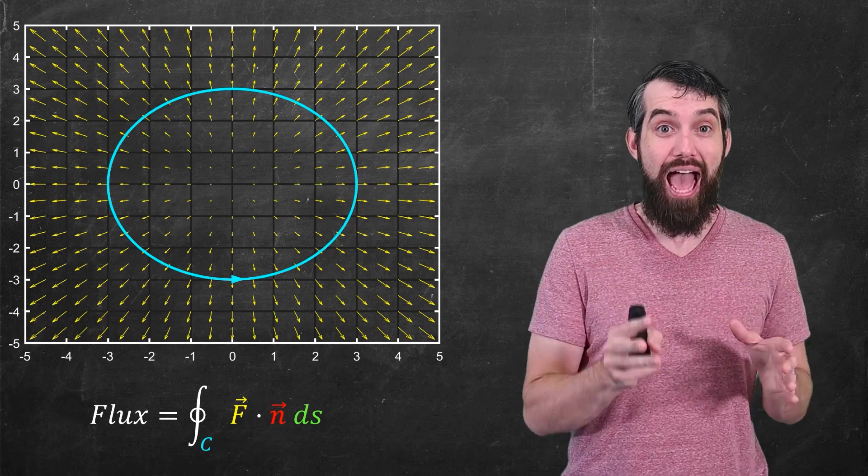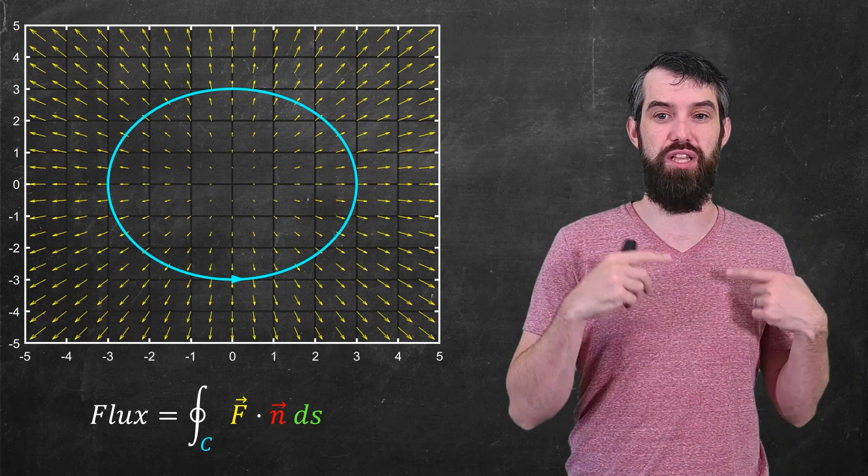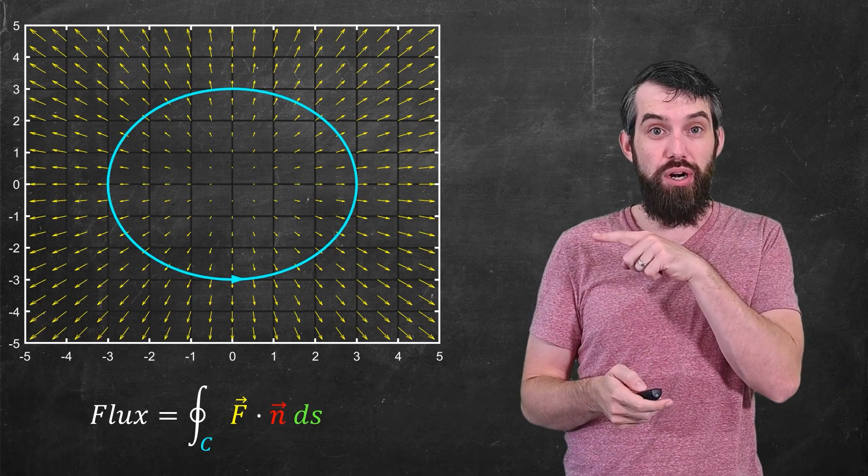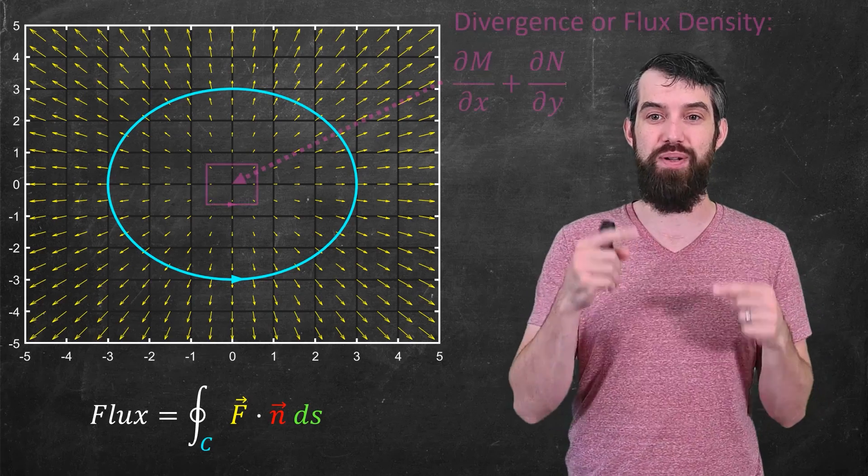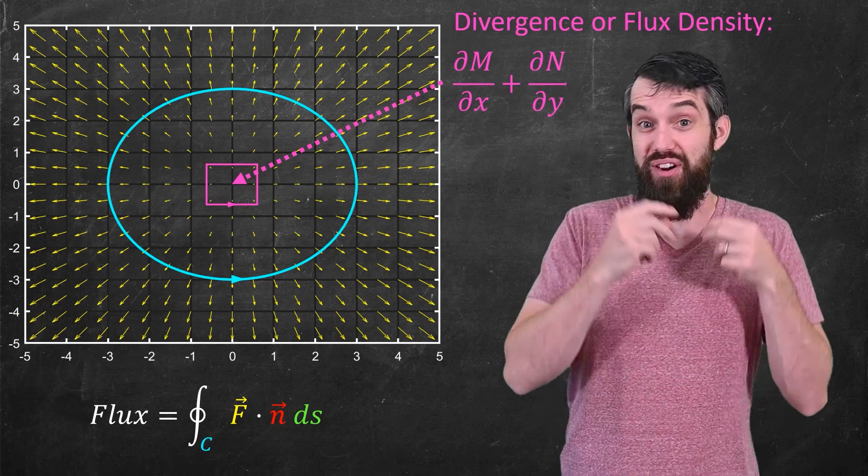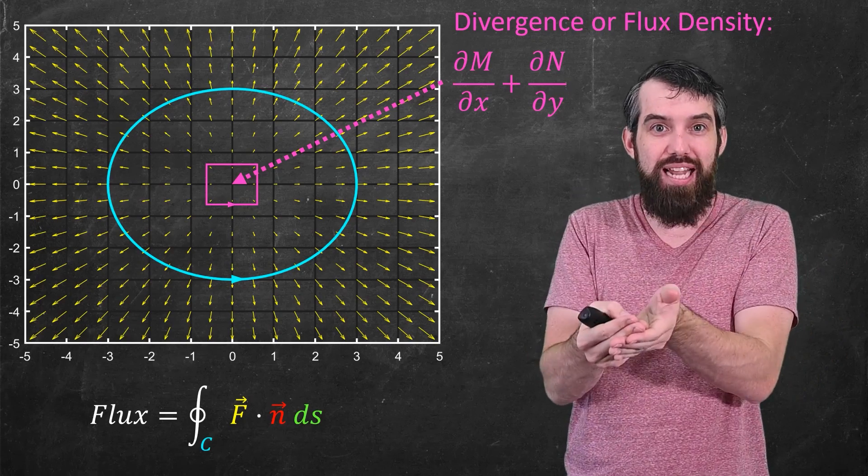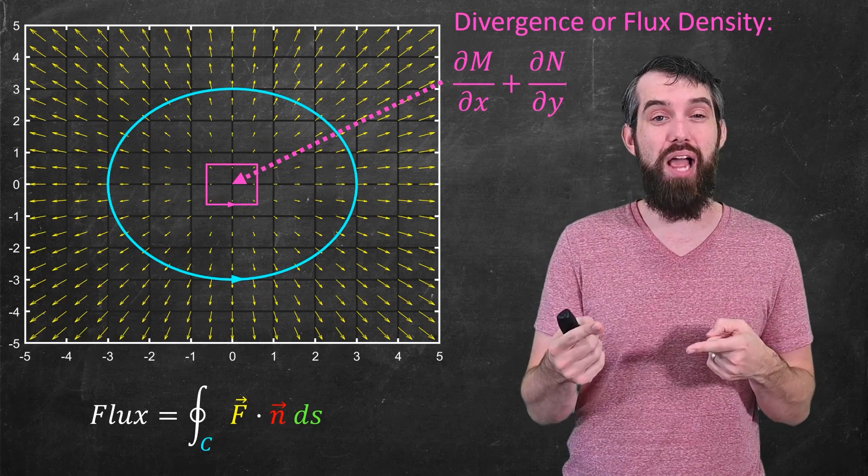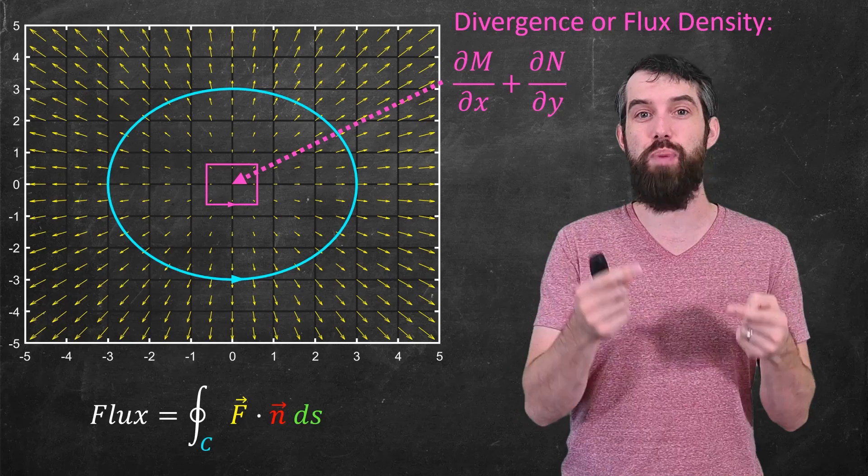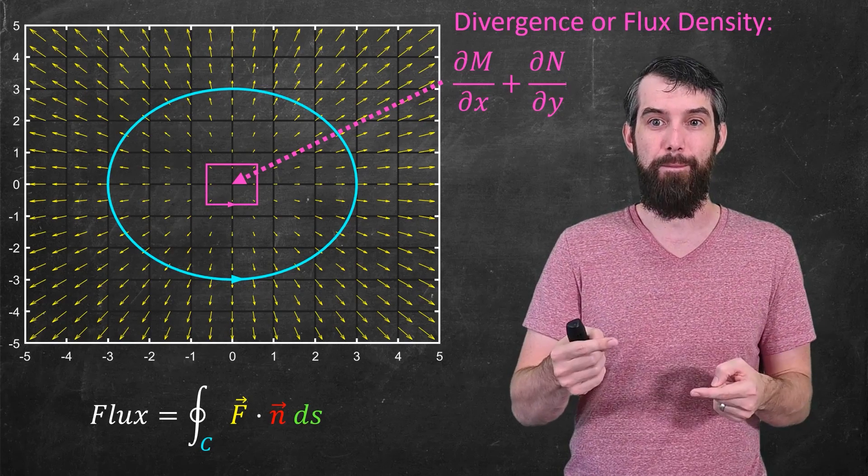Okay, so going back to our original picture, we have the global property, which is the flux around the big large curve, and then if I zoom in on any particular point, and imagine a very tiny rectangle around it, I have the divergence or flux density at some particular point, and it's given by the partial of m with respect to x plus the partial of n with respect to y.